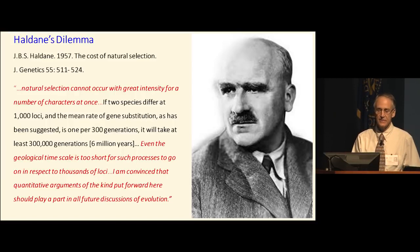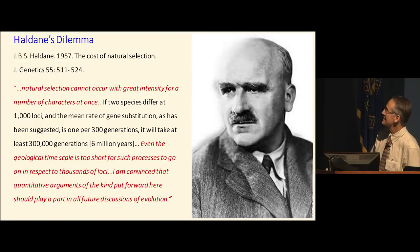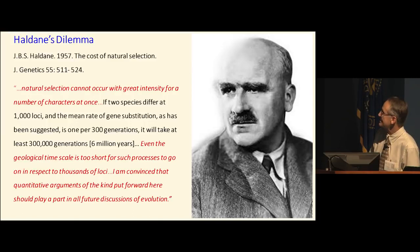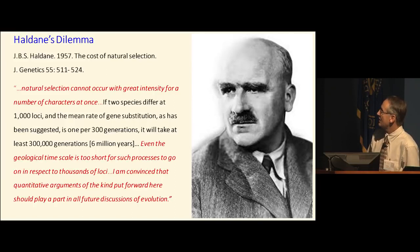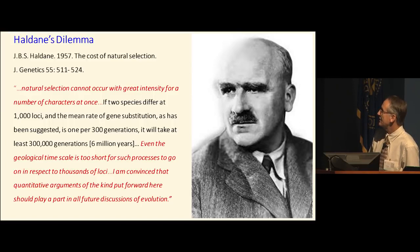Haldane stated: 'Natural selection cannot occur with great intensity for a number of characters at once.' If two species differ at 1,000 different locations, and the mean rate of substitution is 1 per 300 generations, it takes at least 300,000 generations — about 6 million years — to get 1,000 beneficial mutations fixed. He concluded: 'Even the geological timescale is too short for such processes to go on in respect to thousands of loci.' He believed this quantitative argument should play a central part in all future discussions of evolution.